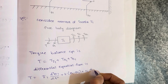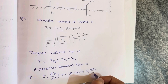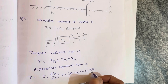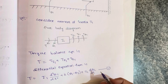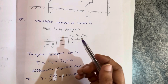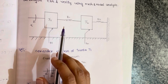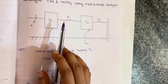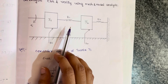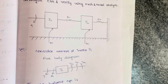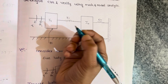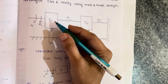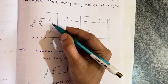Continuing the differential equation for J1: plus B1 times dθ1/dt. Let us assume this as equation number 1. In the problem figure no variables are given, so I am assuming θ1 as the angular displacement for moment of inertia J1.